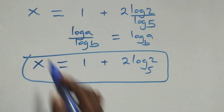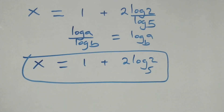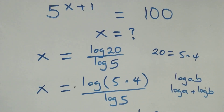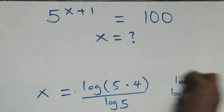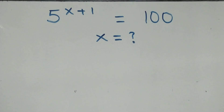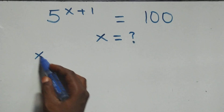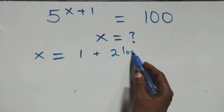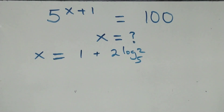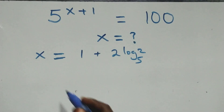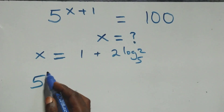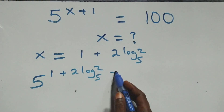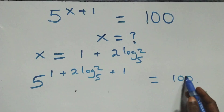The value of x is x equals to 1 plus 2 log 2 base 5. Let's check if this satisfies the given problem. We substitute the value of x, which is x equals to 1 plus 2 log 2 base 5. What we have becomes 5 raised to power (1 plus 2 log 2 base 5) plus 1. This equals to 100 on this side.